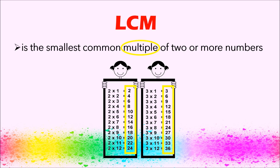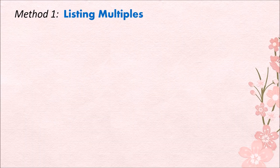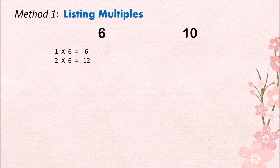Just like GCF, there are also different ways in getting an LCM. First is listing multiples. For example, you are asked to solve for the LCM of 6 and 10. Let's start with 6: 1 times 6 is 6, 2 times 6 is 12, 3 times 6 is 18, 4 times 6 is 24, 5 times 6 is 30, 6 times 6 is 36.